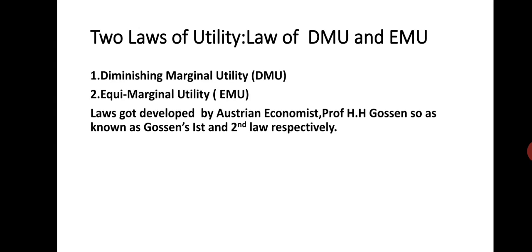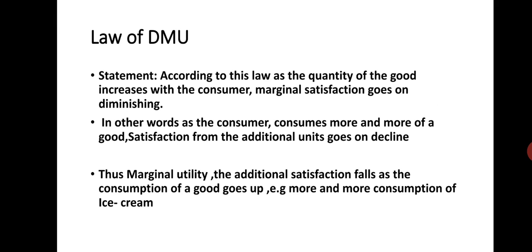We have two laws of utility developed by Professor Gossain: the first and second laws are the law of DMU and EMU — diminishing marginal utility and equi-marginal utility. According to the law of DMU, as the quantity of the good increases with the consumer, marginal satisfaction goes on falling. That is, if the consumer consumes more and more, additional satisfaction from the additional unit will fall.